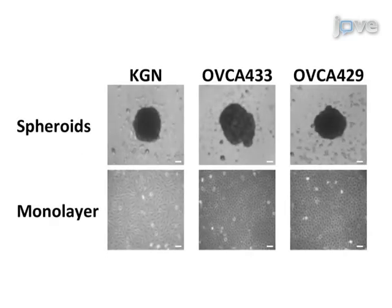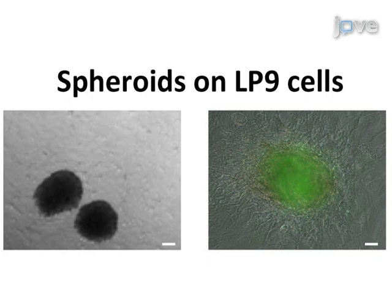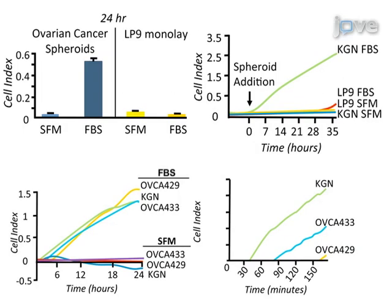In this experiment, two epithelial ovarian cancer cell lines, OVCA 433 and OVCA 429, and an ovarian granulosa cell tumor line, KGN, were used to generate spheroids following overnight culture in U-bottomed wells suspended in methyl cellulose-containing media. All three cell lines formed compact spheroid structures of approximately 400 to 500 micrometers in diameter. The bottom panels show the matching cell line in monolayer; scale bars represent 100 micrometers. Once formed, spheroids were harvested and plated on top of an LP9 mesothelial cell monolayer in an RTCA CIM plate.